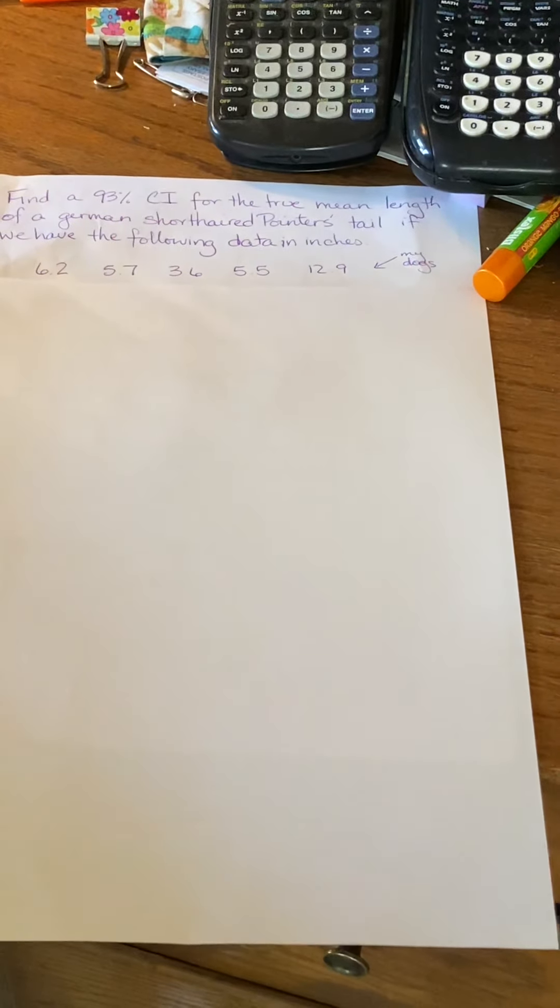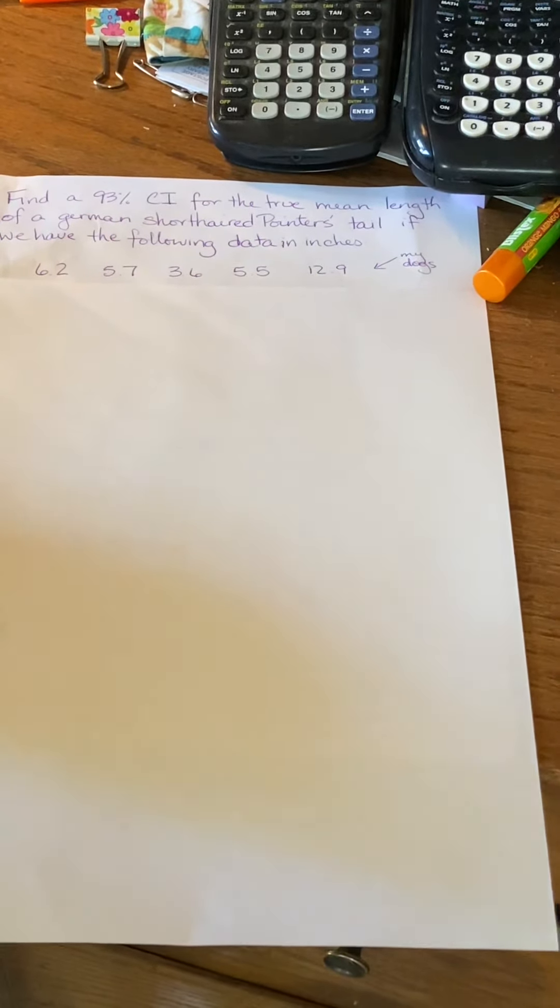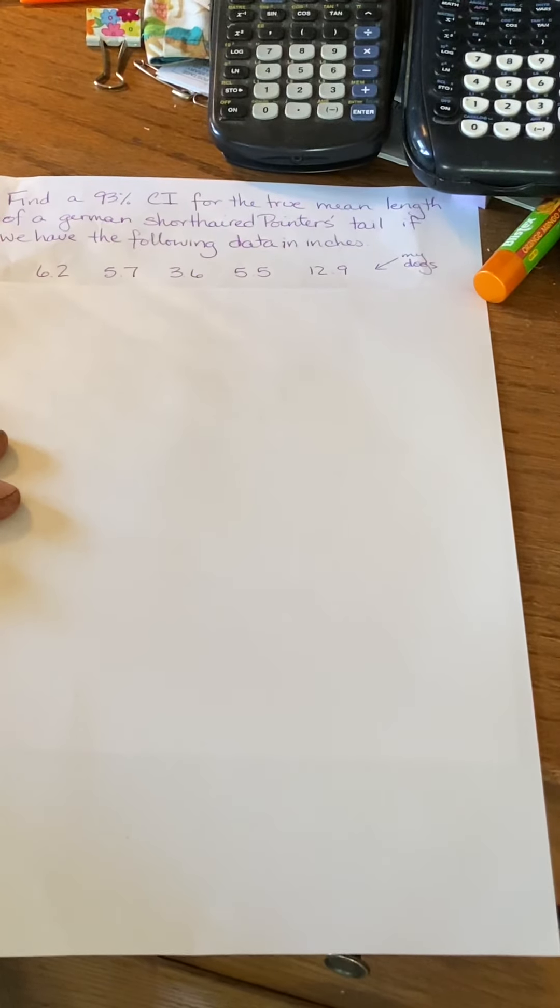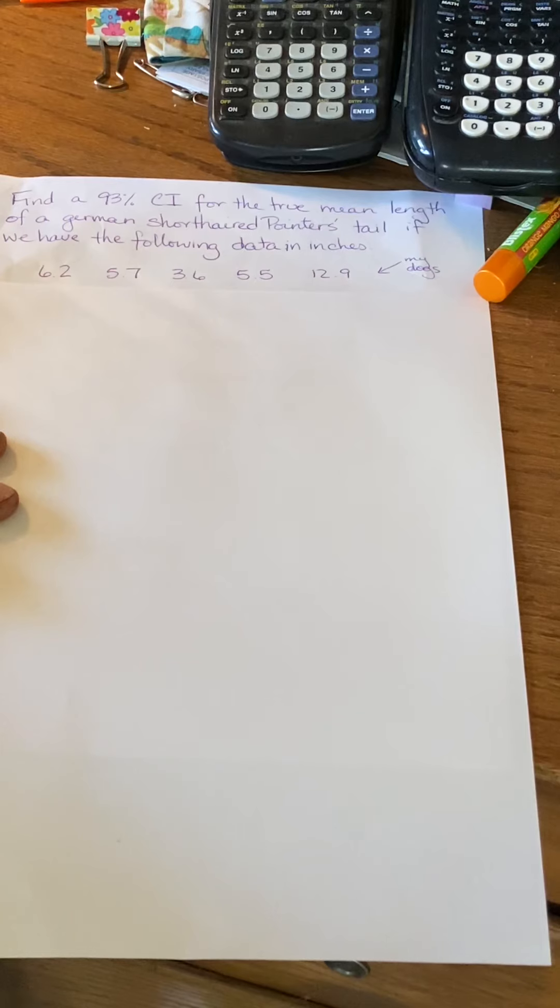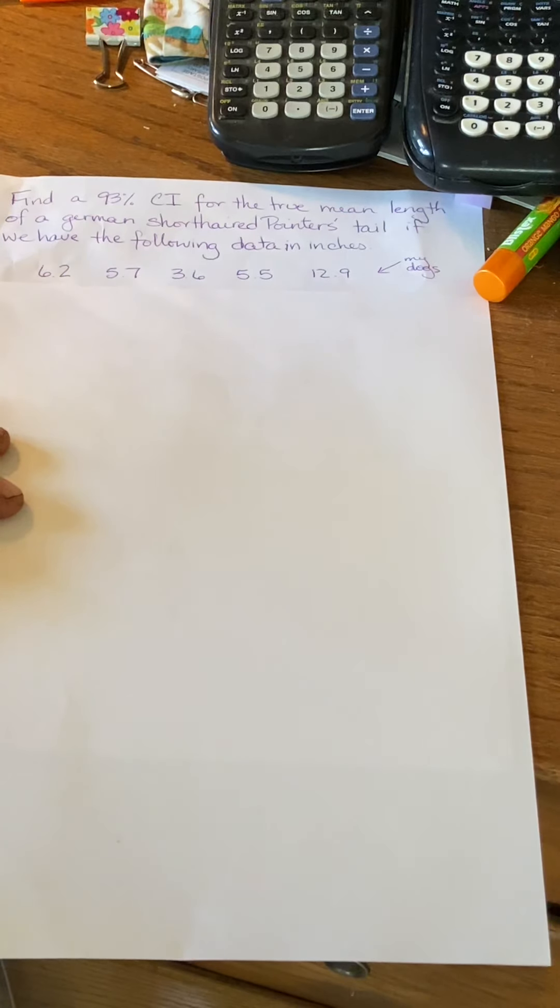Okay, short little video here using the calculator. We're on confidence intervals. Let's say that you were given an example that looked like this: Find a 93% confidence interval for the true mean length of a German Shorthair Pointer's tail if we have the following data in inches. So these are actually the lengths of my five German Shorthair Pointers. This is an actual example.